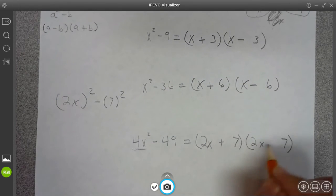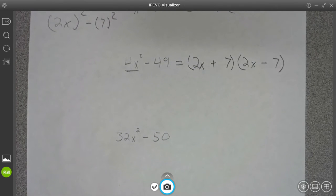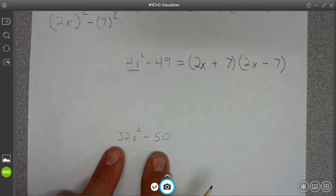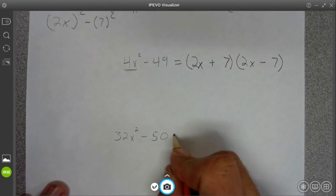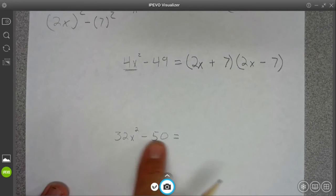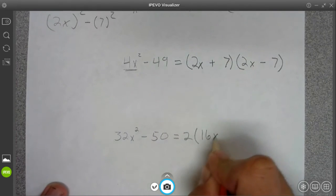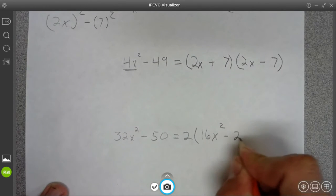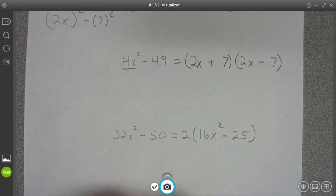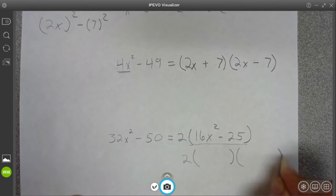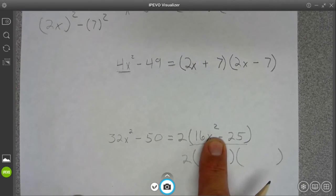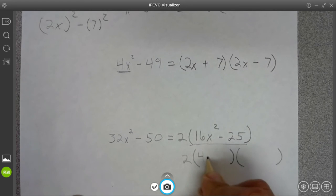Can't do anything about this - 32 is not a perfect square, 50 is not a perfect square. Wait a second, you can factor out a GCF. They have 2 in common, so divide by 2 - that becomes 16x squared and 25. Now this part will factor using difference of squares. What times itself will give you 16x squared? That's 4x. And 5 times 5 is 25. One's plus, one's minus. Not so bad.